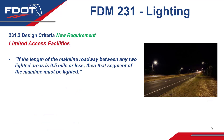Next, staying in Section 231.2 under the heading of limited access facilities, there is a lighting requirement aimed at keeping lighting more consistent on roadways to avoid short segments where rapid eye adjustments are needed. The FDM states that if the length of the mainline roadway between any two lighted areas is 0.5 miles or less, then that segment of the mainline must be lighted. This requirement comes at the request of the Turnpike Enterprise given their great experience with limited access facilities.